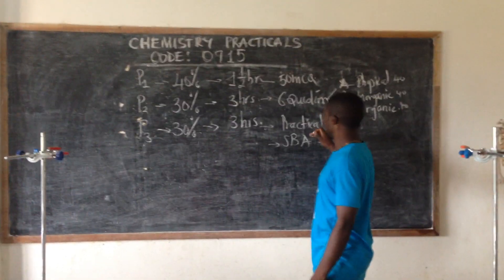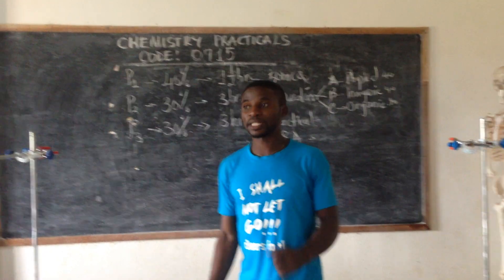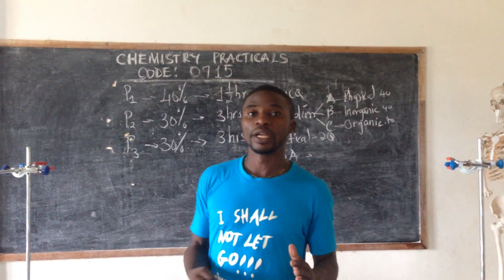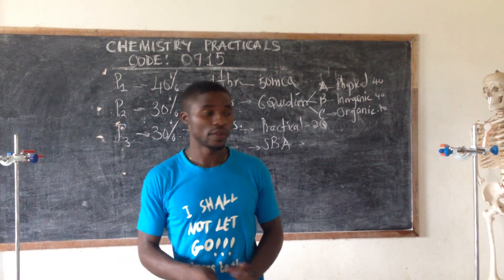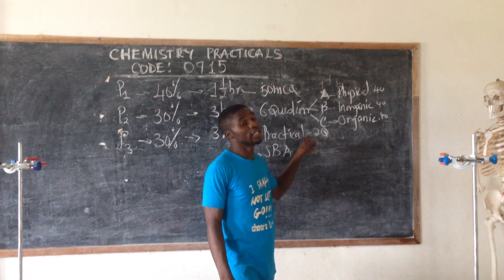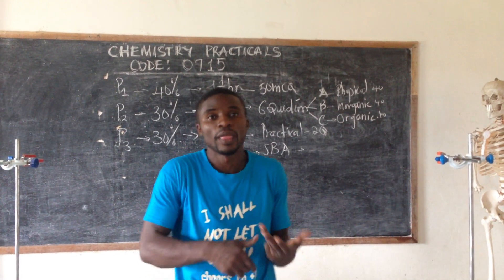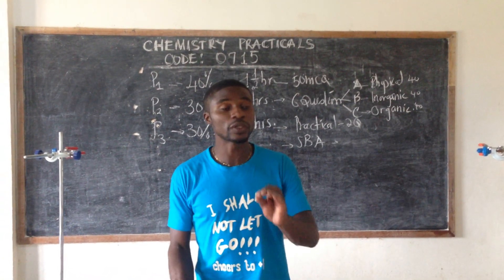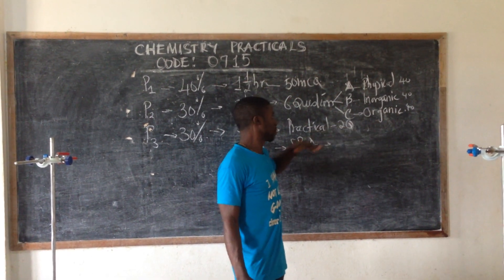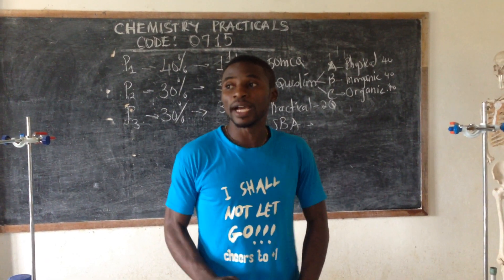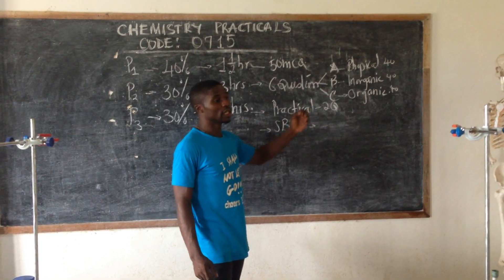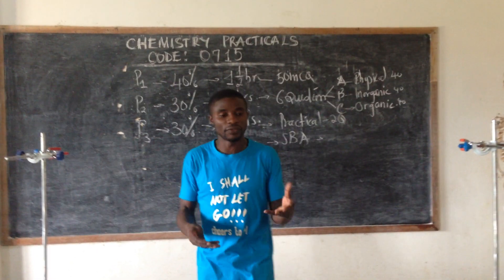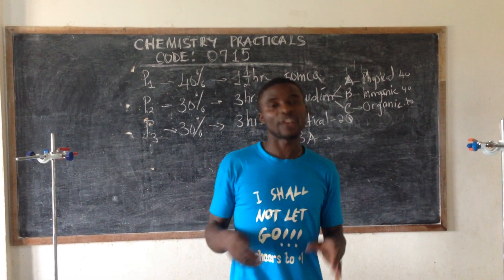Paper 3 has two parts: practicals and the SBA section. The practical has two questions. These two questions cover quantitative analysis and qualitative analysis. Question 1 of the practical deals with quantitative analysis — questions can come from rates, thermochemistry, titration (be it acid-base, redox, complexometry, or precipitation). Question 2 deals with qualitative analysis — testing for what is present — which involves tests for gases, ions, and structural features of some organic compounds.